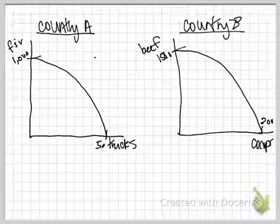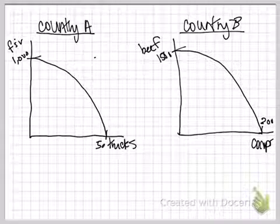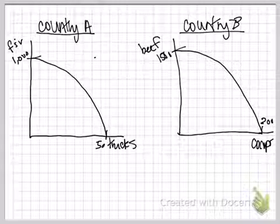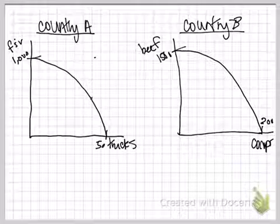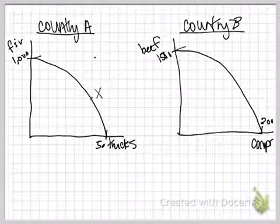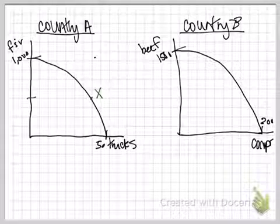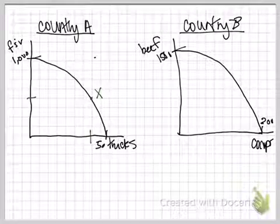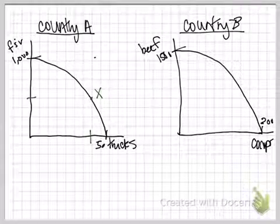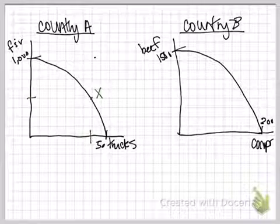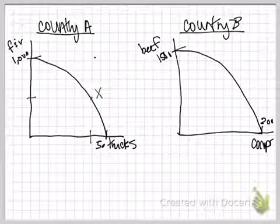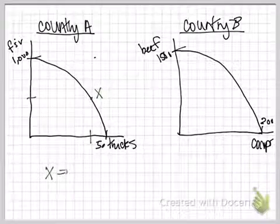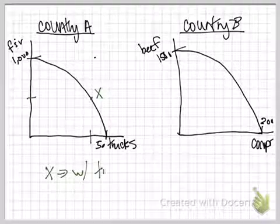So suppose we're currently trading, country A with country B. And we'll get into more of this when we get to our international chapter later. But maybe right now country A is producing here at point X. And so at point X, here is the amount of fruit and vegetables we have. Here are the amount of trucks we have. So again, relatively speaking, we're producing more trucks right now than we are producing fruits and vegetables. And so X is what's happening with trade.